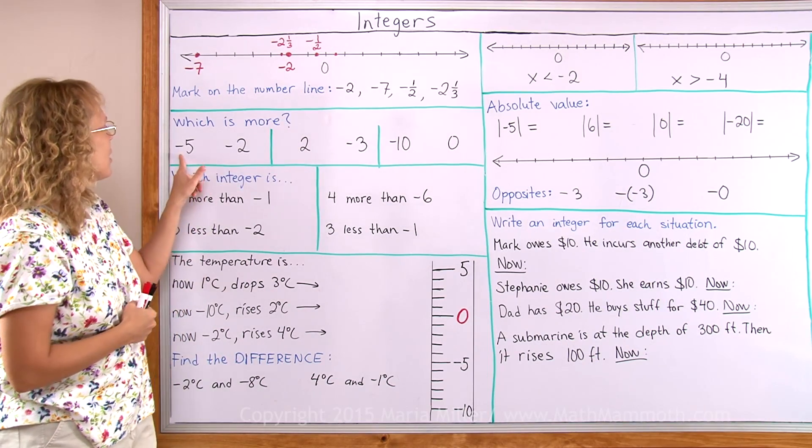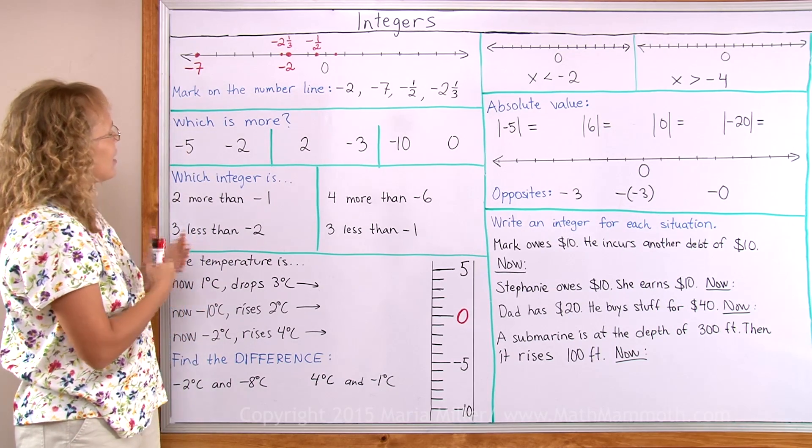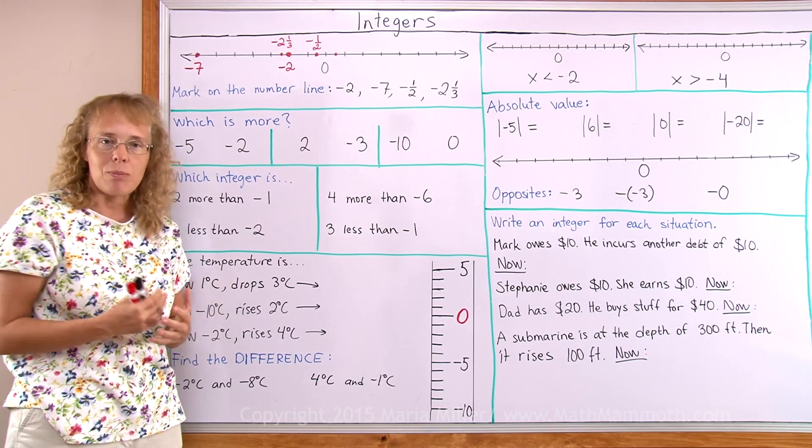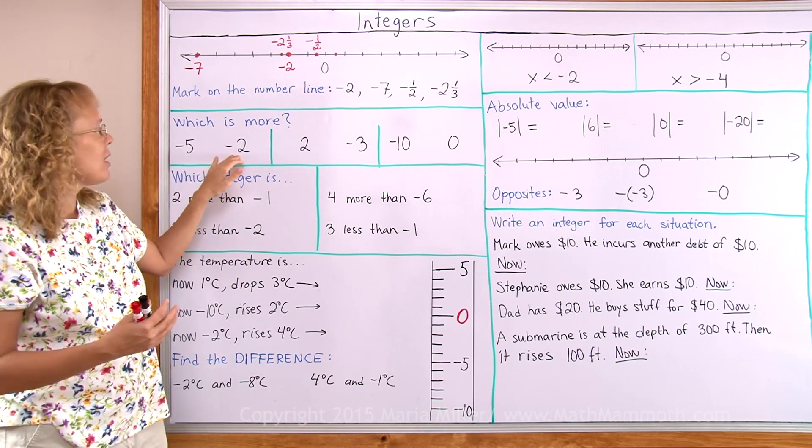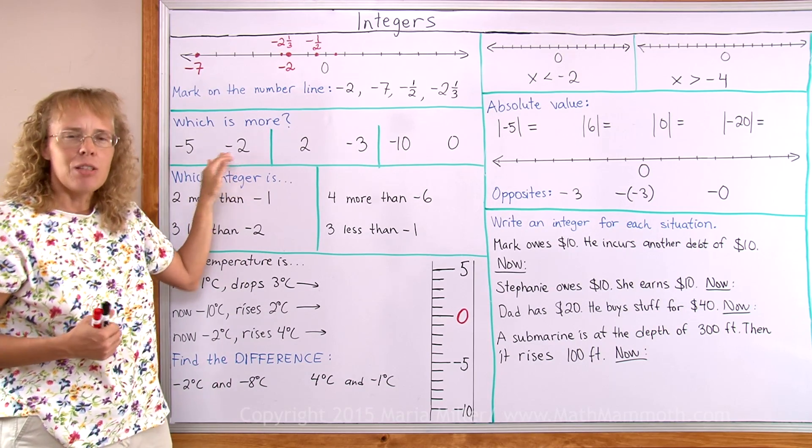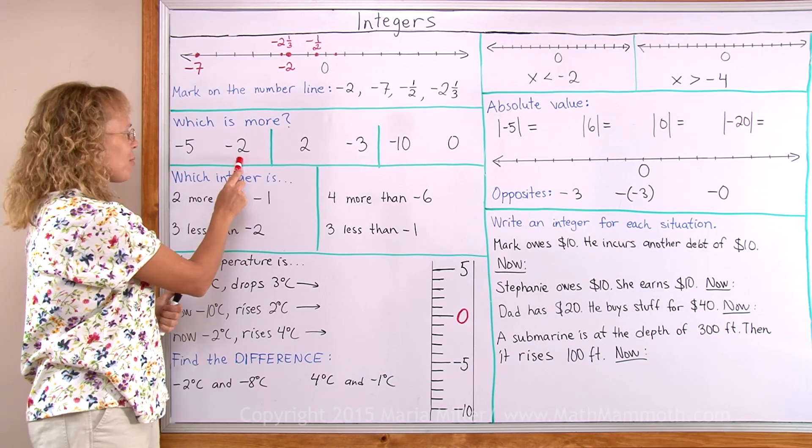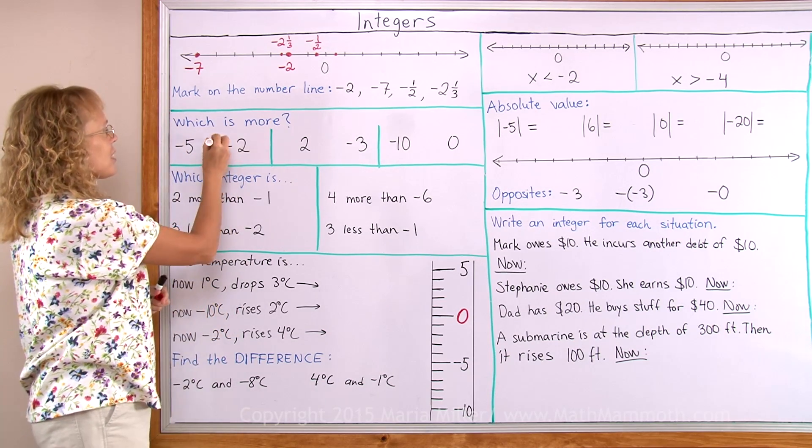Which is more? Negative 5 or negative 2? Now think of them as debts or money amounts. This would mean that you are $5 in debt. This would mean that you are $2 in debt. Which one is the better situation? Obviously this one is. The less you are in debt, the better. So negative 2 is more.